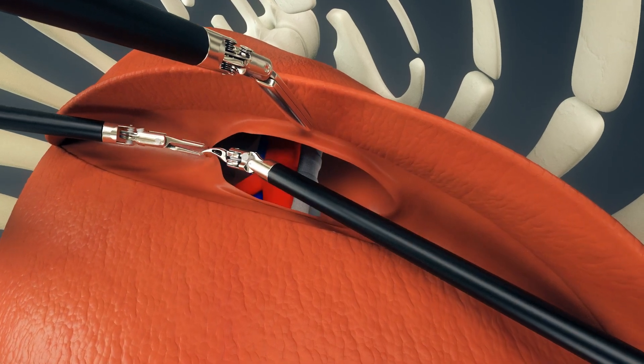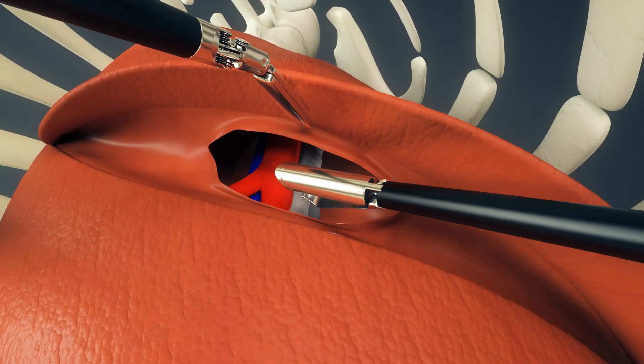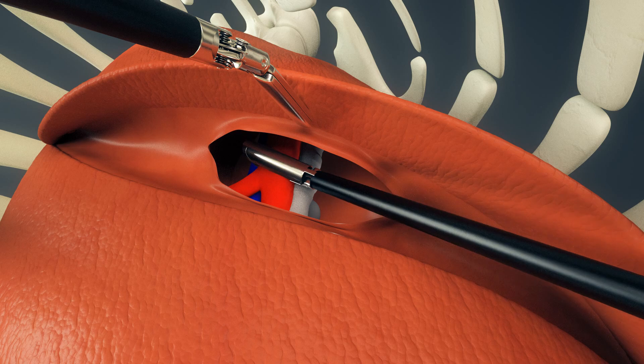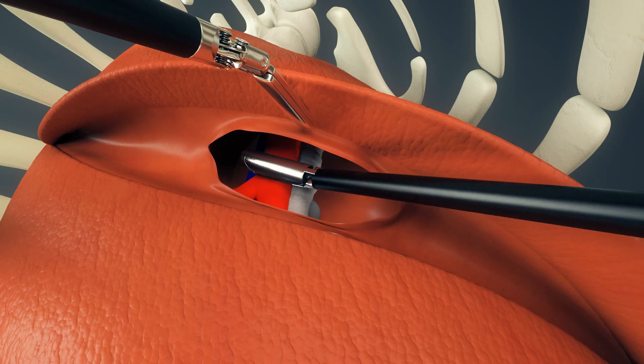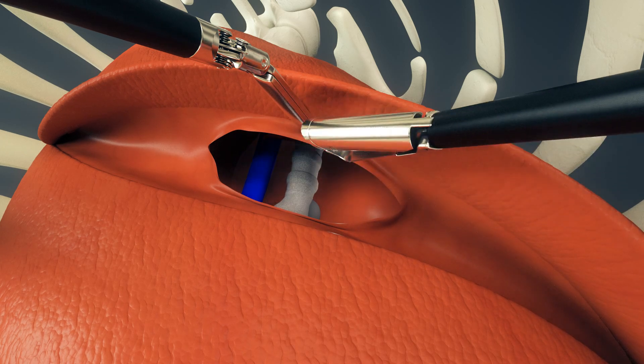The surgeon has a right-handed instrument, a left-handed instrument, and a third accessory arm for extra retraction. Using the third arm, the surgeon lifts the lung, thus exposing the pulmonary artery, the pulmonary vein, and the bronchus.